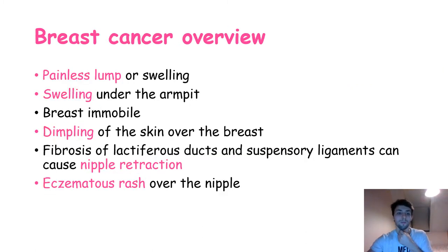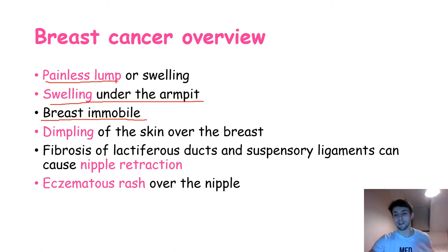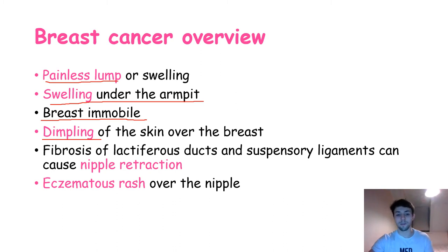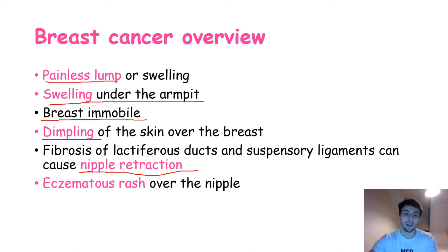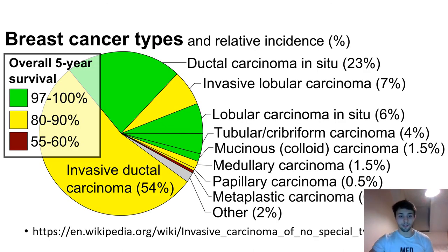Breast cancer can present as a painless lump or swelling, swelling under the armpit, or an immobile mass in the breast. Sometimes there can be skin dimpling — if the breast cancer invades nearby structures including the suspensory ligaments, this can cause skin dimpling. Fibrosis of the lactiferous ducts and suspensory ligaments can also cause nipple retraction. Sometimes it can also present as an eczematous rash over the nipple.